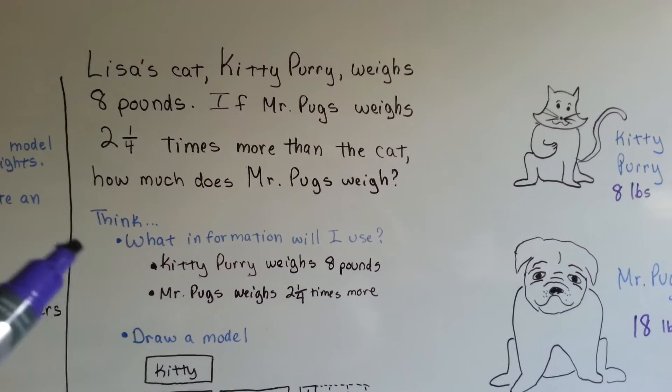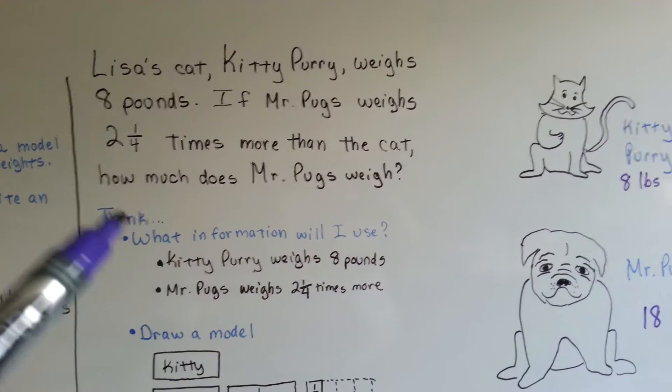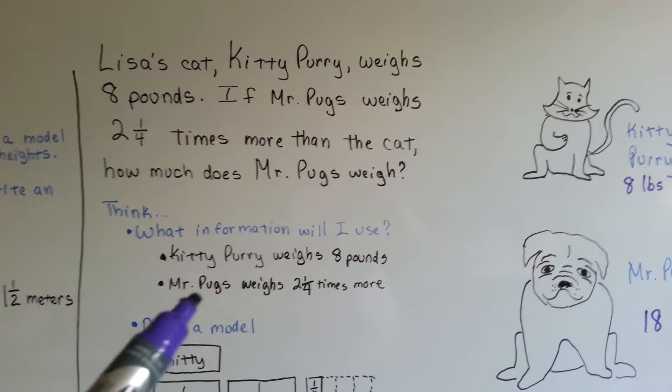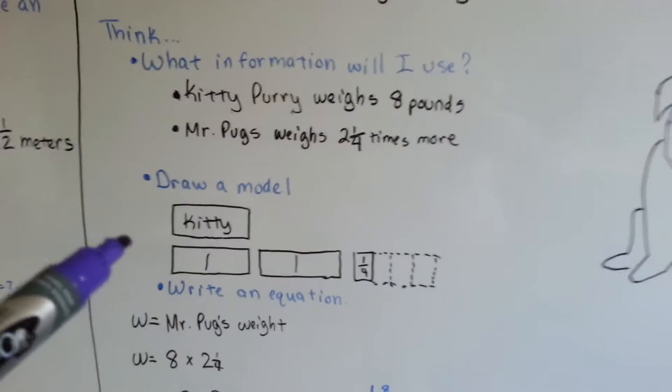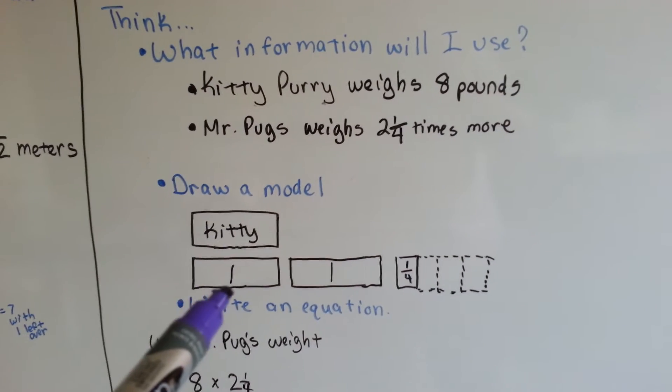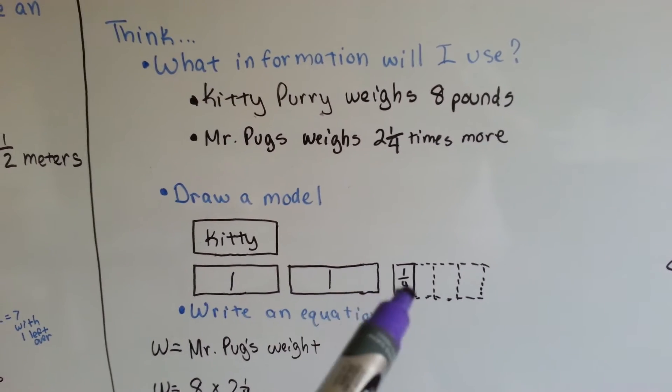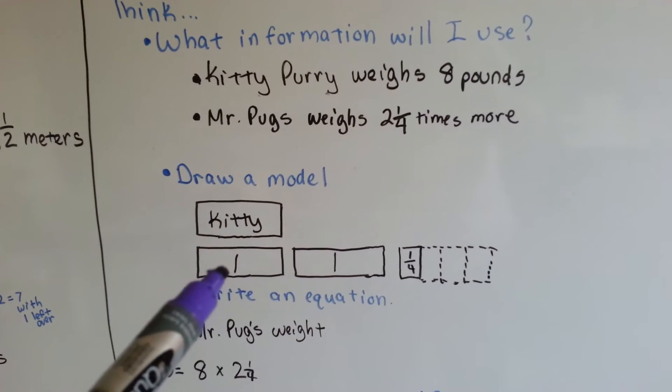We think to ourselves, what information will I use? We know that Kitty Puri weighs eight pounds, and Mr. Pugs weighs two and one-fourth times more. If we draw a model, here's Kitty Puri, and Mr. Pugs is two and one-fourth times the weight of Kitty Puri.